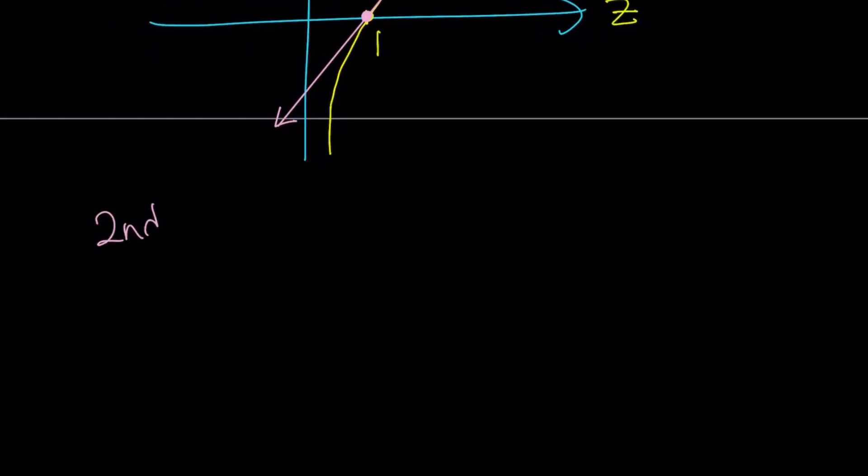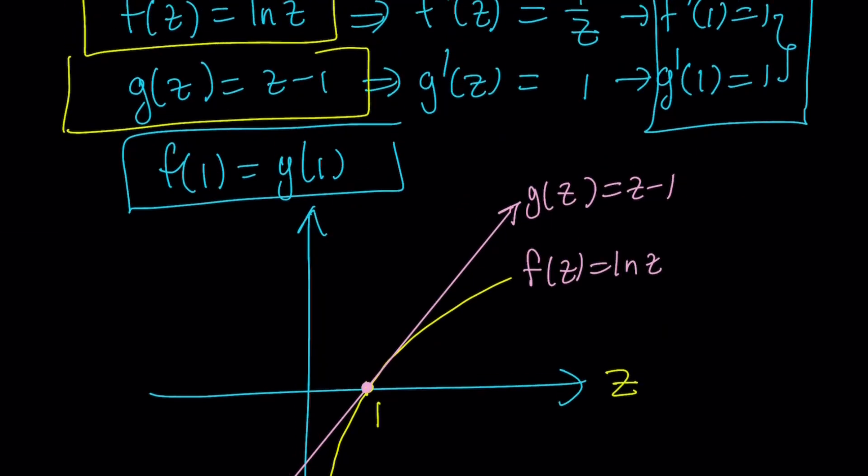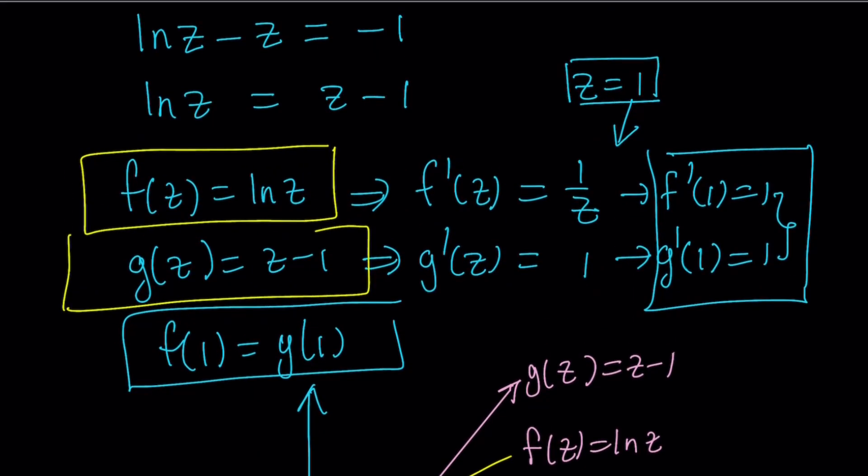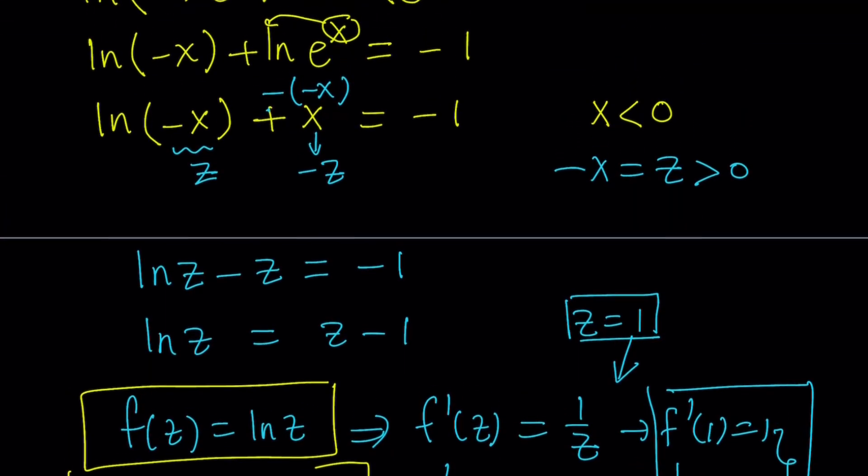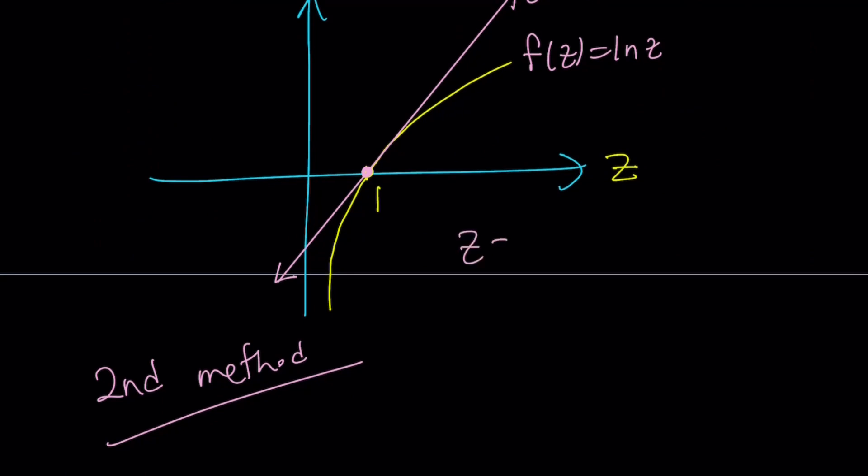Let's go ahead and quickly talk about the second method. By the way, we just found the z value. So what is z? Z is negative x. That's crazy, isn't it? So if z is 1, then x is negative 1. That's our solution.